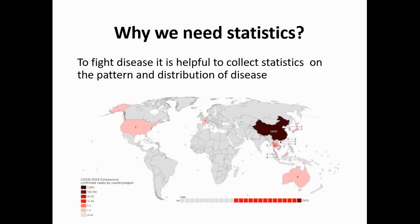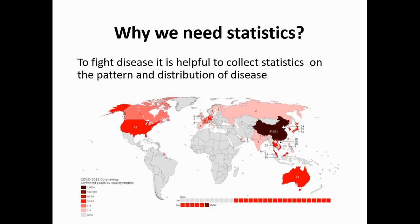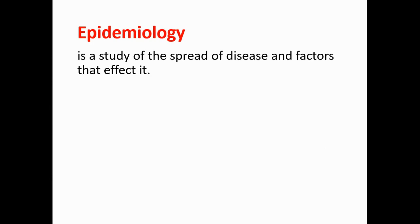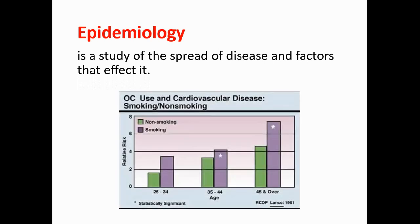Here you can see the statistical data about coronavirus distribution. So to fight with this infectious disease, you need to see the whole picture together with all the numbers and distribution pattern. Who is dealing with this distribution map? Is there any specific branch of science responsible for it? Yes, there is, and it's called epidemiology. Epidemiology is the study of spread of disease and factors that affect it. For example, the study of smoking effect on cardiovascular disease is performed by epidemiologists. By the help of their studies, we can see that smoking has an unquestionable effect on the heart.